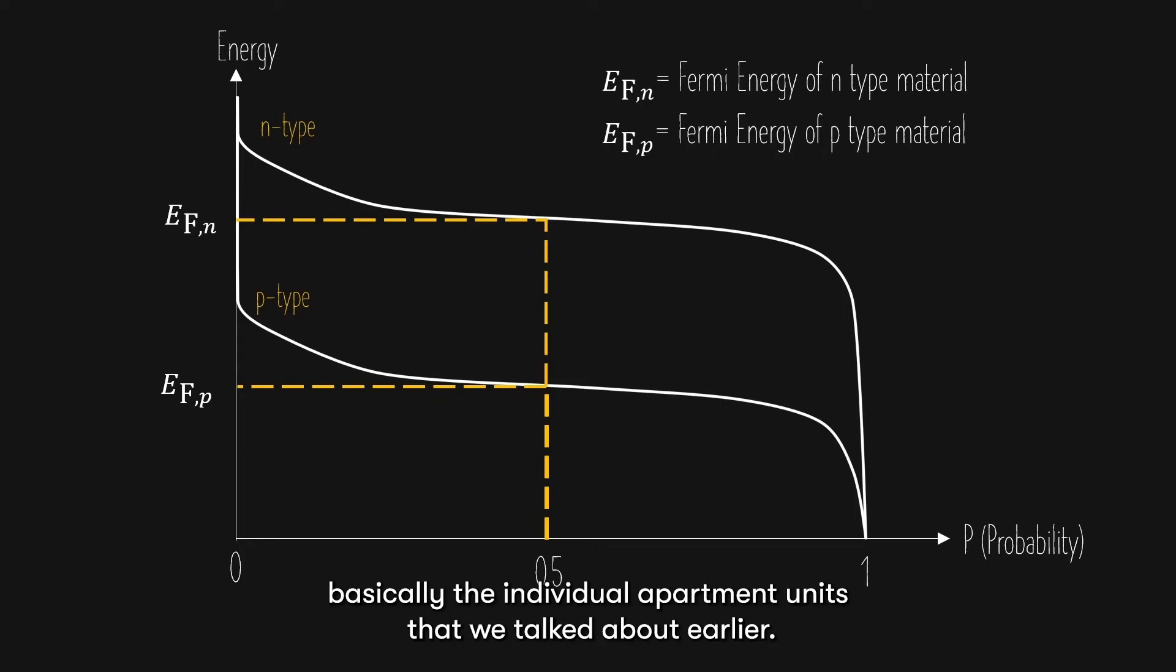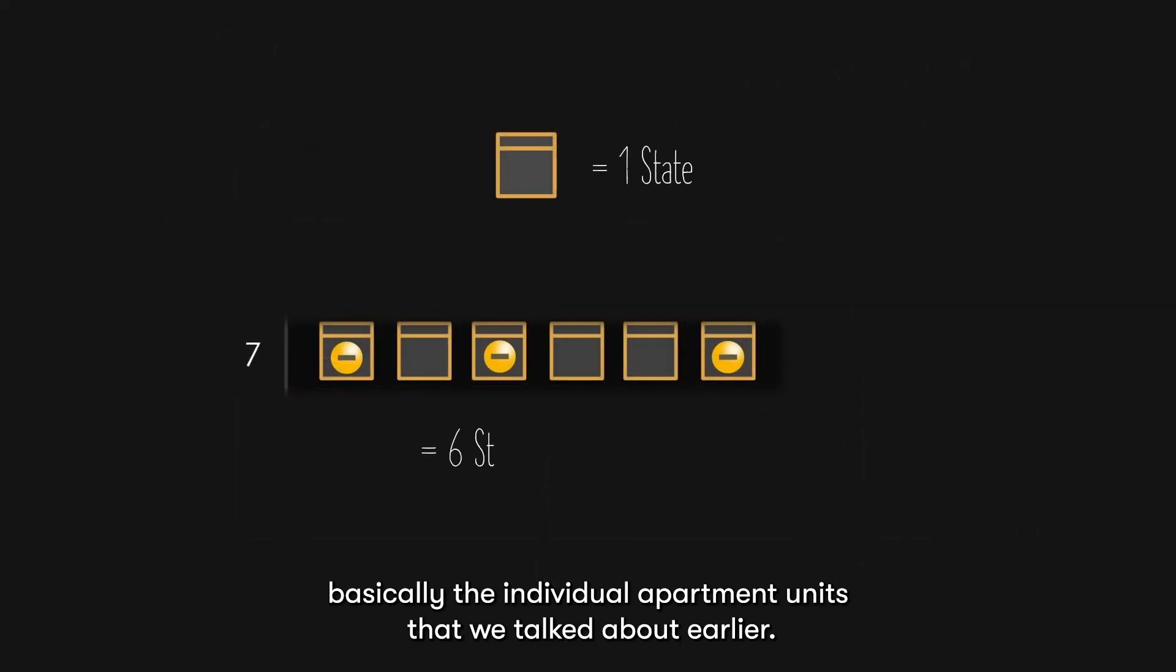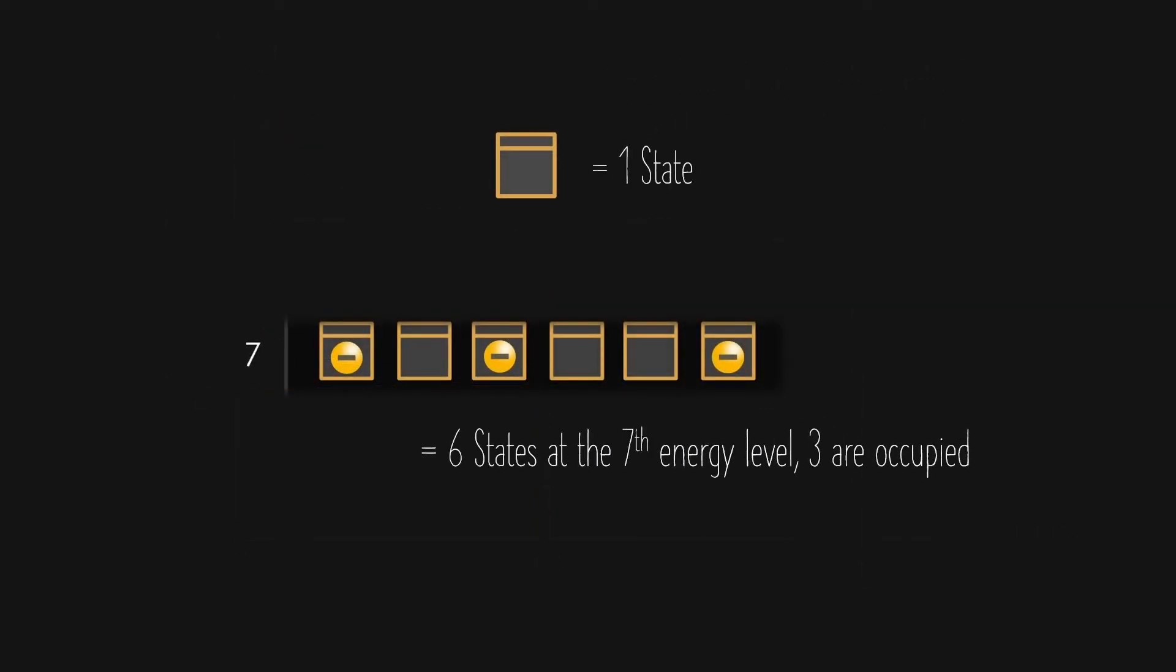State is basically the individual apartment units that we talked about earlier. For example, for n-type doping, the seventh energy level has six states, and only three are occupied with electrons. This is a whole other topic called density of states, but we will not cover it here.